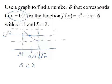As long as our x is in between 0.91 and 1.12, we know that our function value will be within epsilon—within 0.2 of our L, which is 2. This is not a symmetric interval about a equal 1.